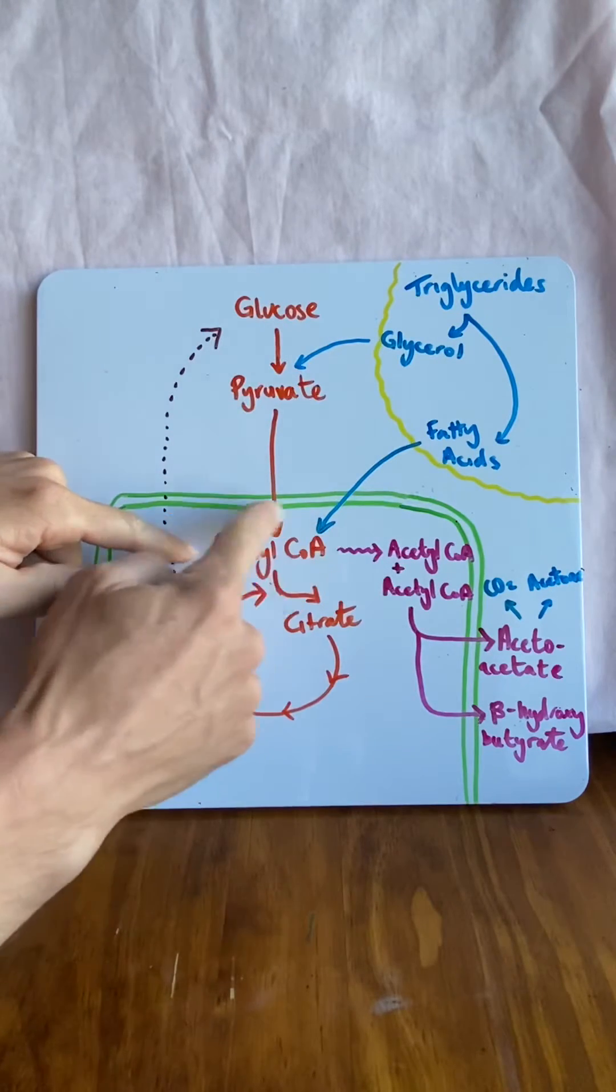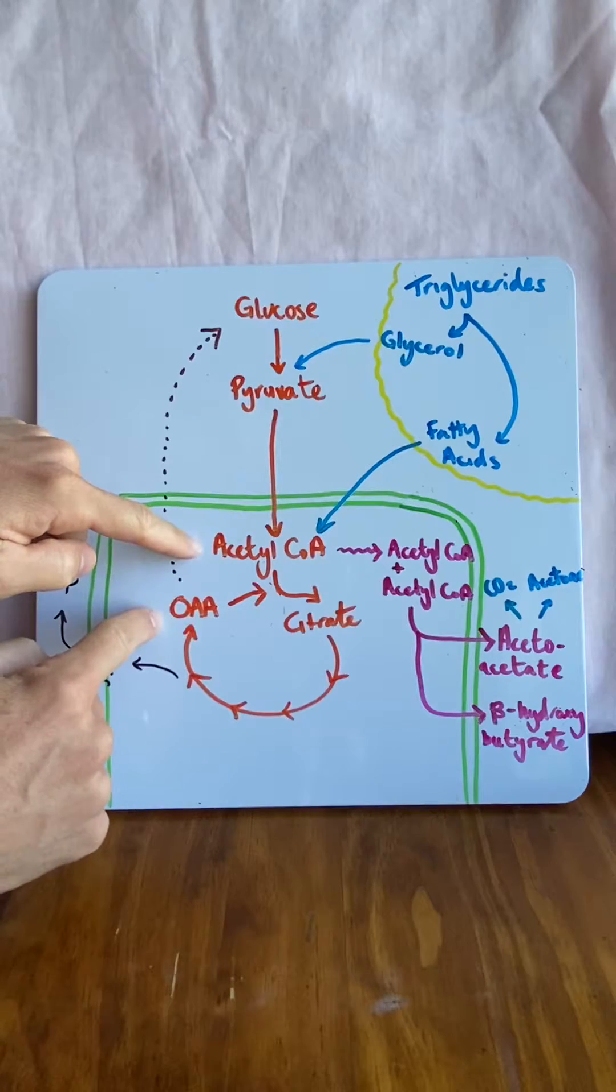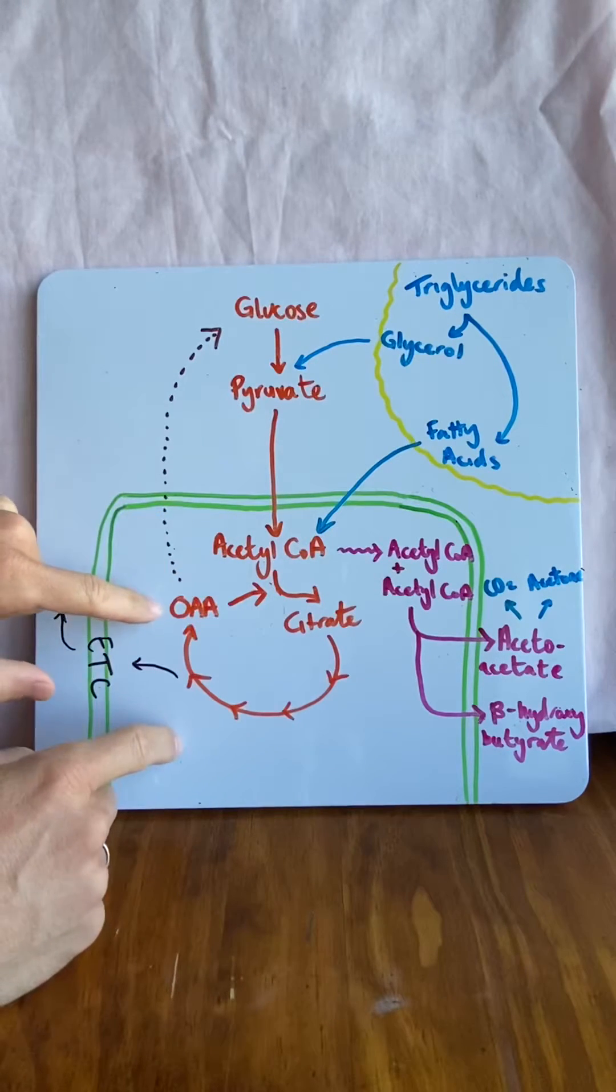Now here's the thing. If you're producing acetyl-CoA, it needs oxaloacetate as a substrate to undergo the Krebs cycle, but oxaloacetate's jumped out.